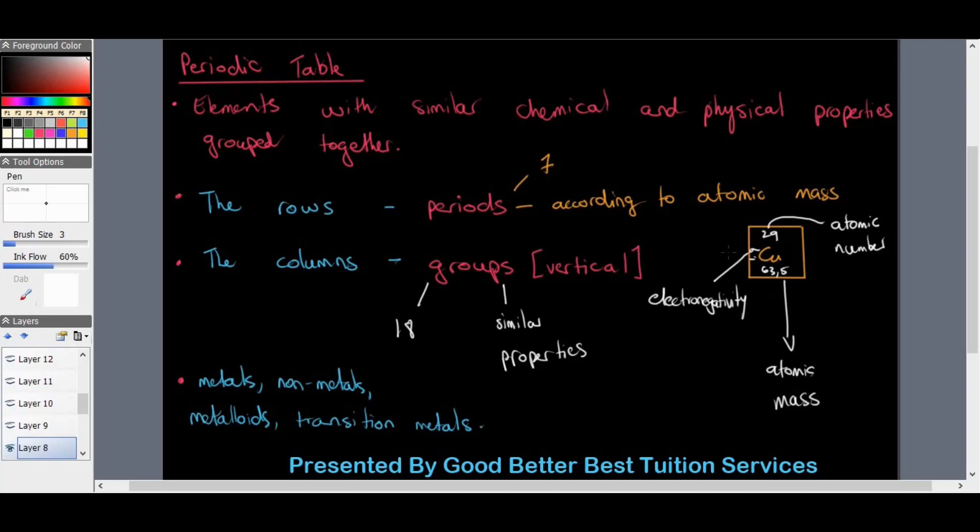The elements that we do find on the periodic table are metals, non-metals, metalloids, as well as transition metals, which are grouped under metals. Let's look at each of these separately.